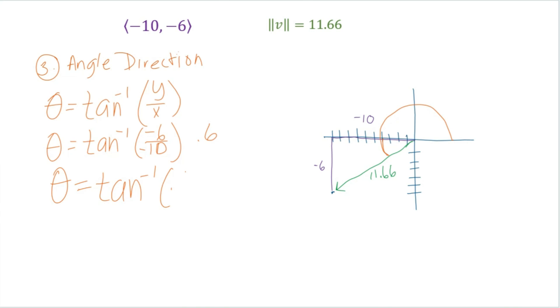Theta equals the inverse tangent of 0.6. So our theta is equal to 30.9 degrees. Or we can say round it to 31 degrees.